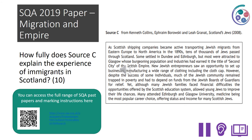Here is an example How Fully question from the 2019 SQA paper on Migration and Empire: 'How fully does Source C explain the experience of immigrants in Scotland?' — worth 10 marks. You can pause the recording and complete this source question under timed conditions; as a 10-mark question, it should take about 25 minutes. If you don't study Migration and Empire, use the QR code on screen to access SQA past papers and select a How Fully question from your section. Use the marking instructions available online to correct your work.